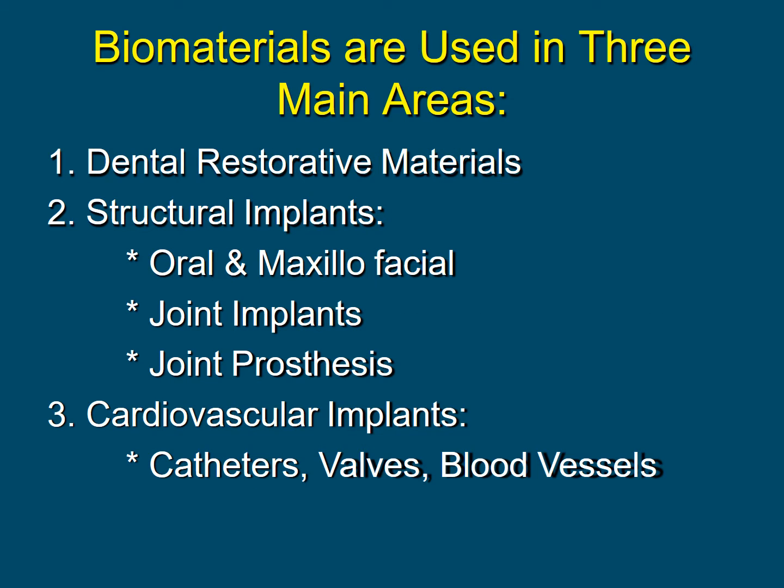The three main areas of biomaterials are: dental restorative materials; structural implants, which include oral and maxillofacial, joint implants and joint prosthesis; and cardiovascular implants, which include catheters, valves, and blood vessels.